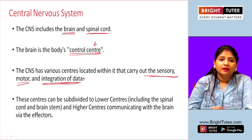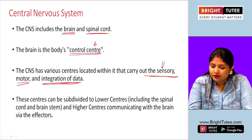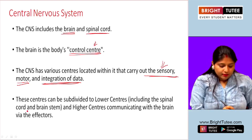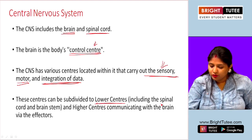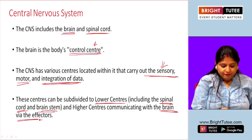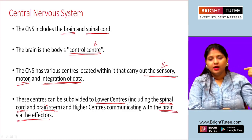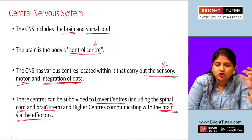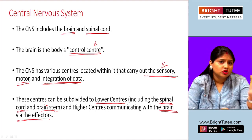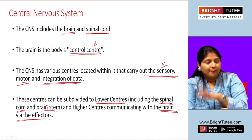The brain carries out sensory, motor, and integration functions at different centers. These centers can be subdivided into lower centers, which include the spinal cord and the brain stem, and higher centers that communicate with the brain via effectors. The higher center is essentially the functioning of the brain itself, while the lower center refers to the spinal cord and brain stem.